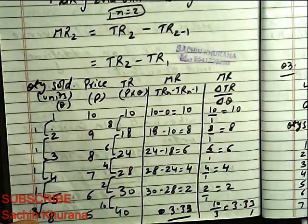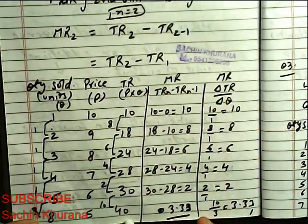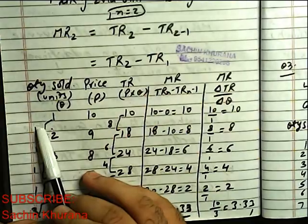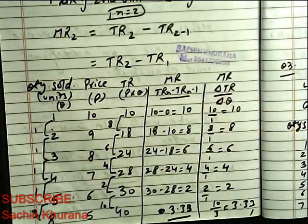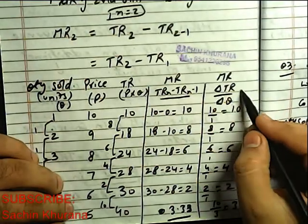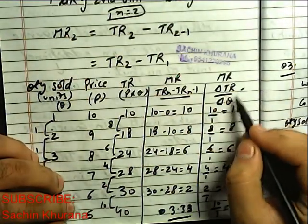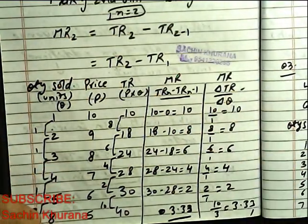Now see, what is TR? This is TR, P into Q. Now we have MR here from TR n minus TR n minus 1, and here we have MR from change in TR upon change in Q. Both methods, we have to do this question.